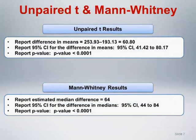Looking at the results for the unpaired t-test and the Mann-Whitney test together, we see very comparable results. The estimated median difference of 64 is only slightly larger than the mean difference of 60.80. The width of the confidence interval is approximately the same for both tests, and the p-values are comparable as well. Although this similarity in results is not uncommon, particularly for large, well-behaved samples, substantial discrepancies in results can occur in both small and large samples.